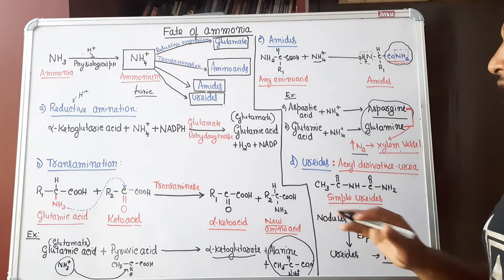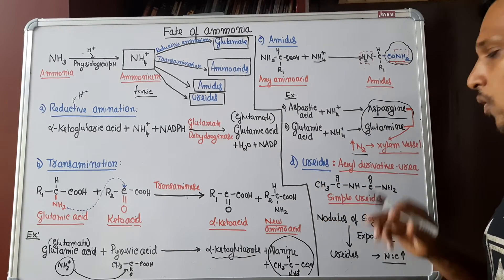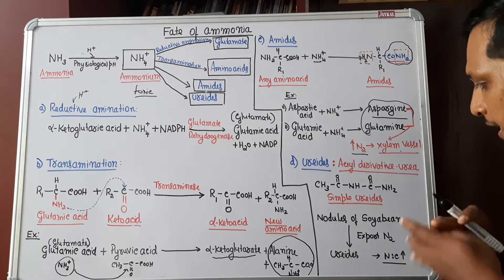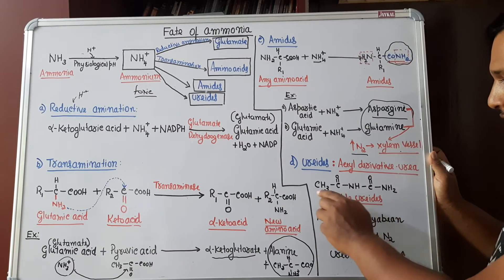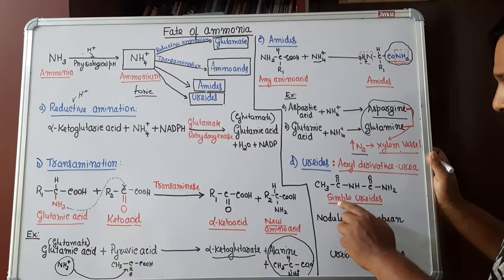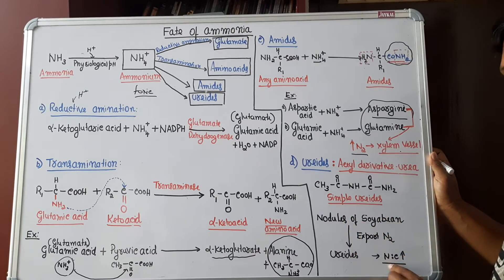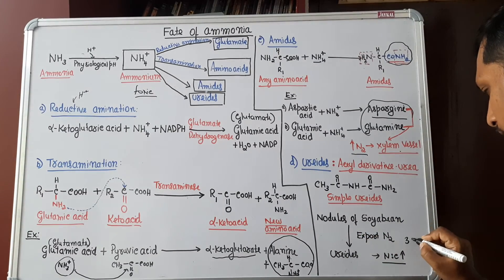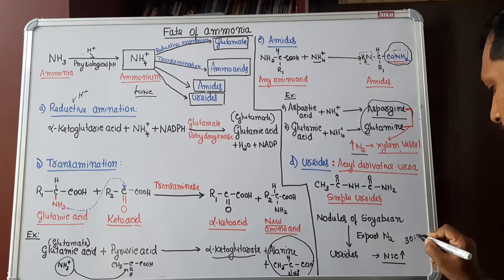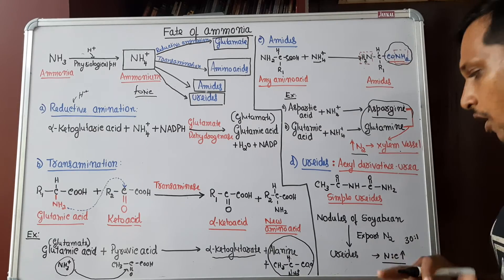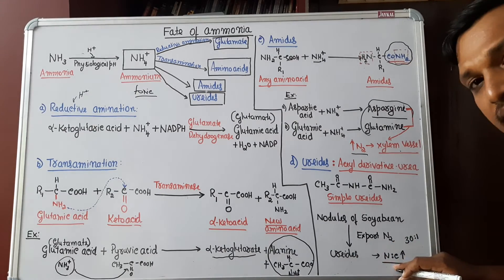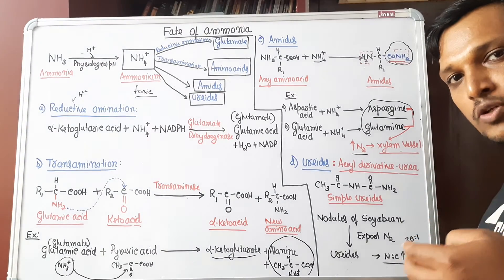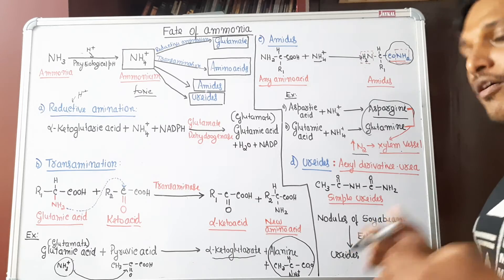Fourth fate of ammonium ion is they can form urides. What are urides? Acyl derivatives of urea which here I have represented one simple uride. Look at the carbon and nitrogen. The urides are the compounds with high carbon nitrogen ratio. If you ask me what is the optimum carbon nitrogen ratio, it is for every 30 parts of carbon, one part of nitrogen is the optimum ratio. In urides, there is high nitrogen to carbon ratio which means more the nitrogen to carbon ratio. It will help in cycling of nutrients.